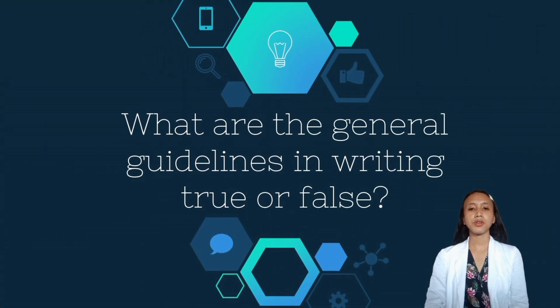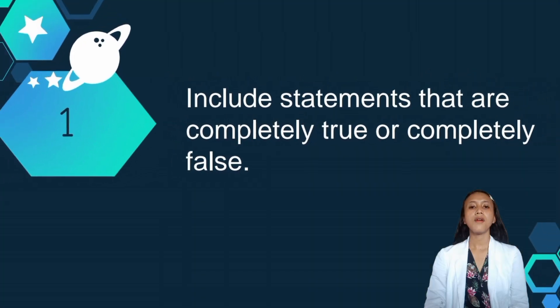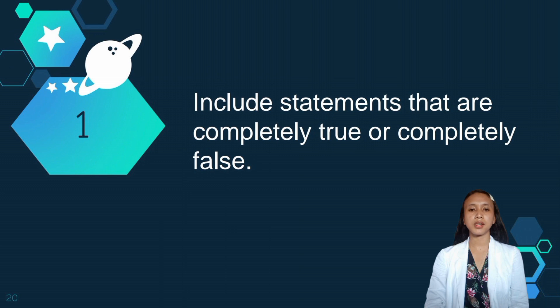Now let's proceed to the general guidelines in writing true or false items. The first is include statements that are completely true or completely false. As you know, a true or false test is made up by several statements, assessing your knowledge of the objectives. Many statements will appear true because most of the statement is true. However, one word in the statement that makes it false makes the entire statement false.